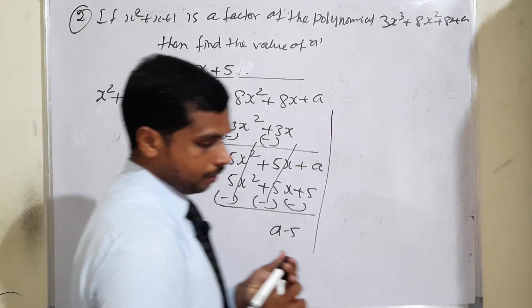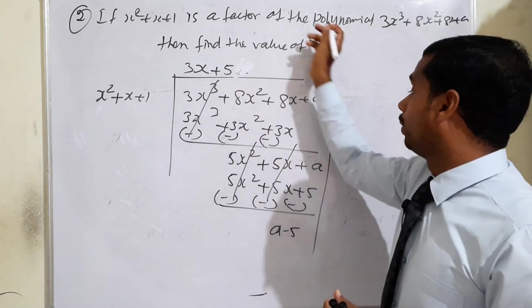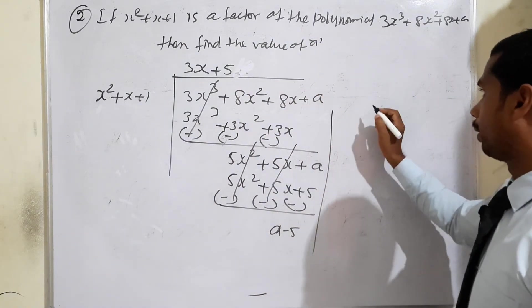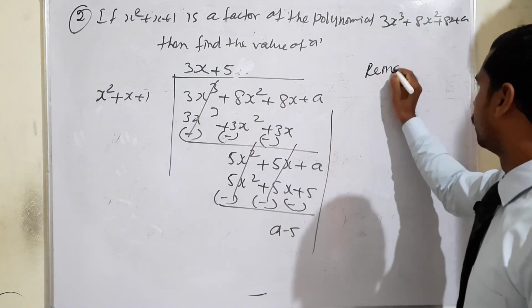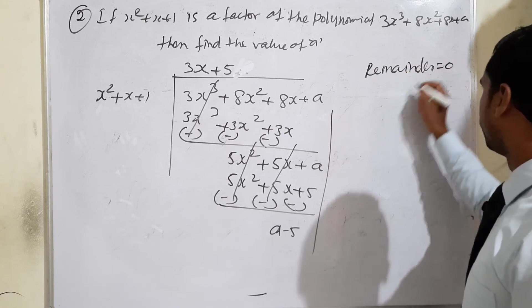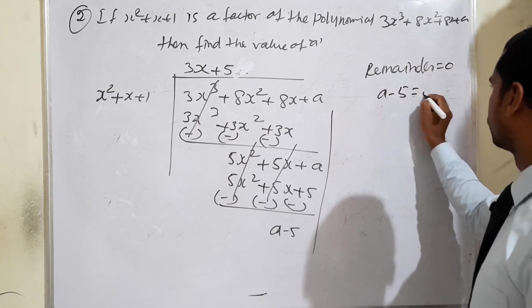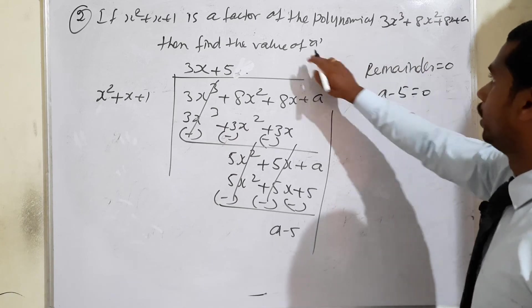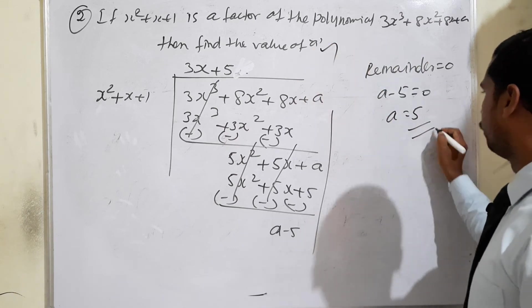This is the remainder. Since it's a factor of the polynomial equation, the remainder must equal zero. Therefore, a minus 5 equals 0, so the value of a is 5.